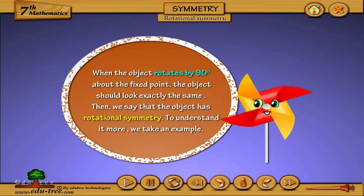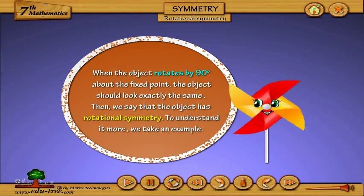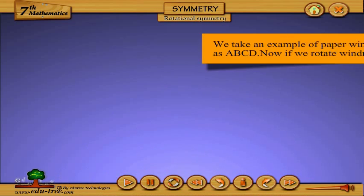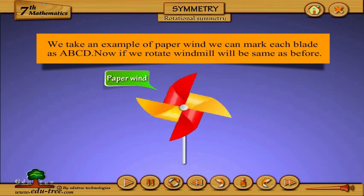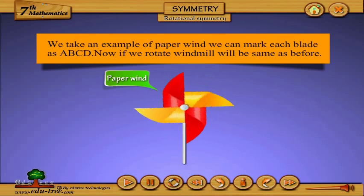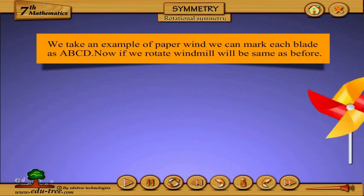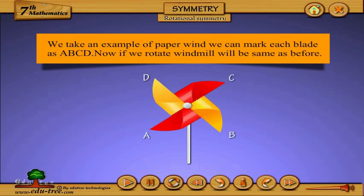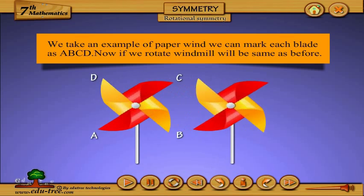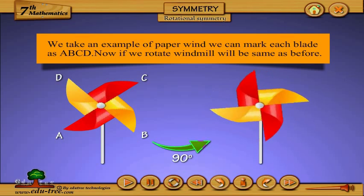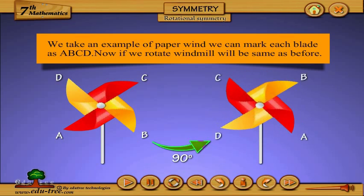To understand this, let's take an example of a paper windmill. We can mark each blade as A, B, C, D. Now, if we rotate the windmill, it will look the same as before.